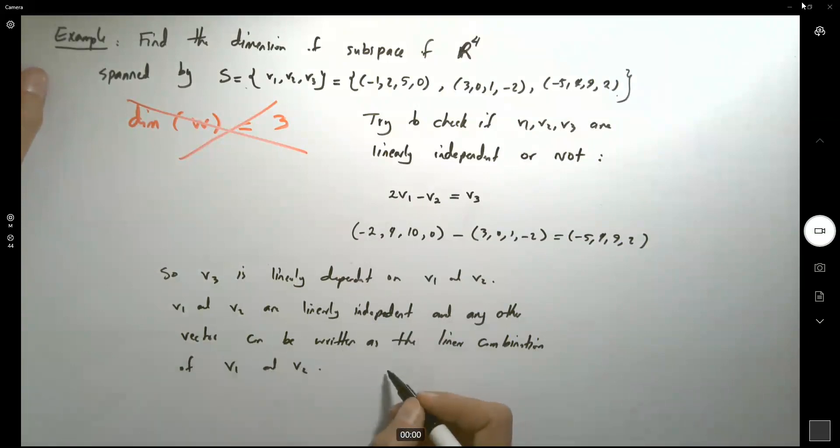So we expect this subset to be spanned by these two vectors, v1 and v2. So the dimension of this subspace is 2.